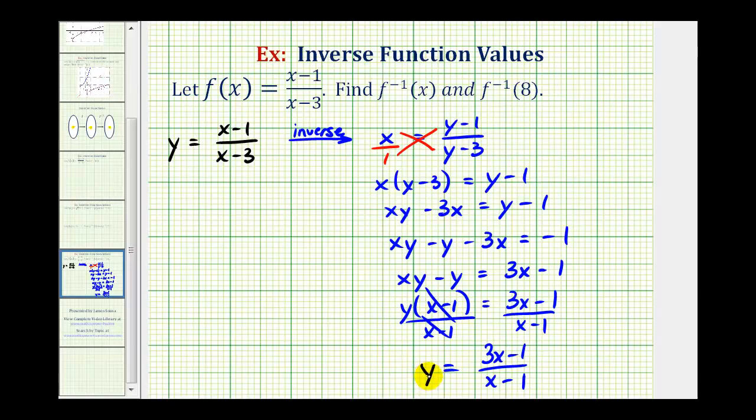so we replace y with f^(-1)(x). Therefore, f^(-1)(x) = (3x - 1)/(x - 1).